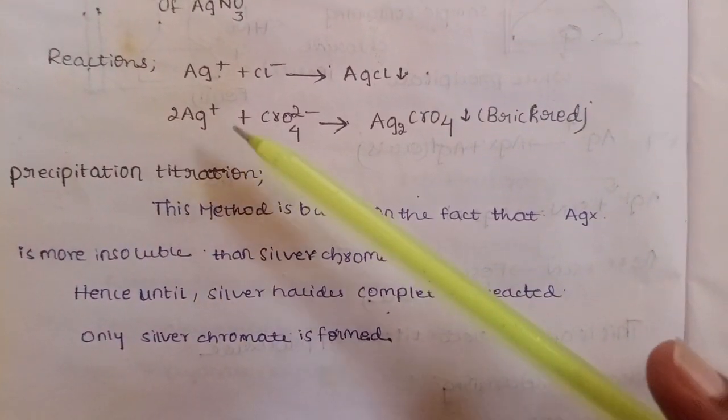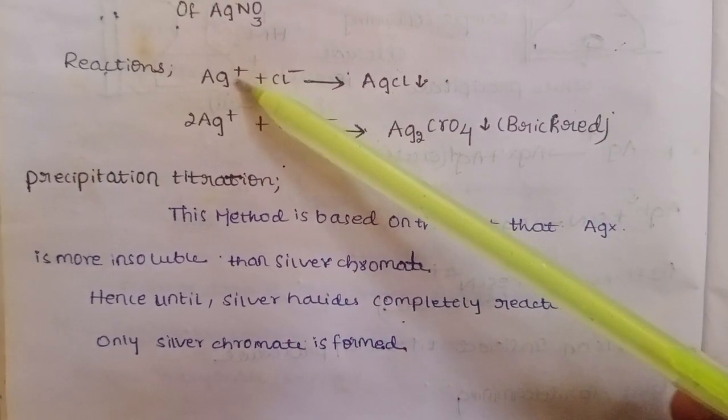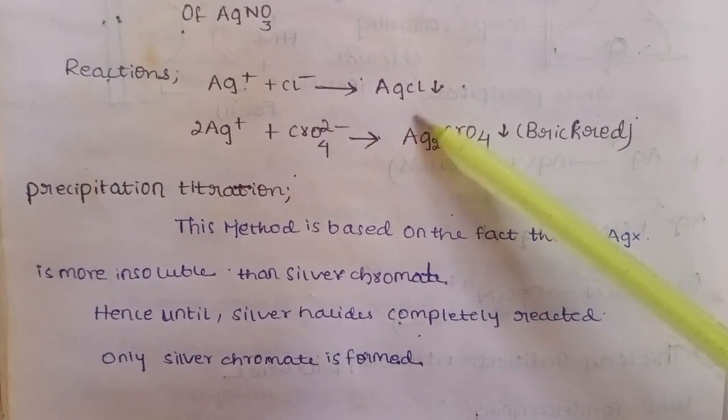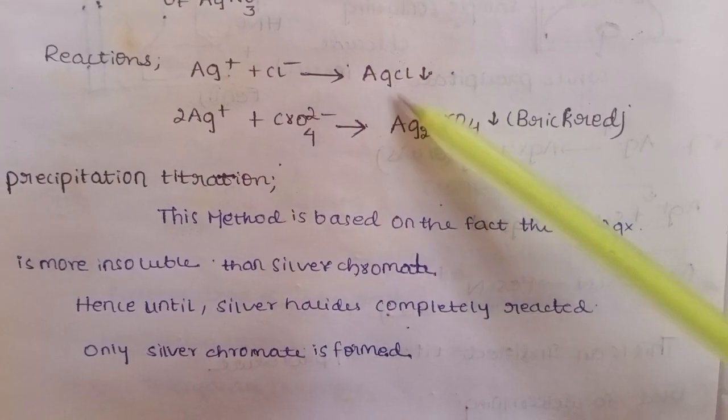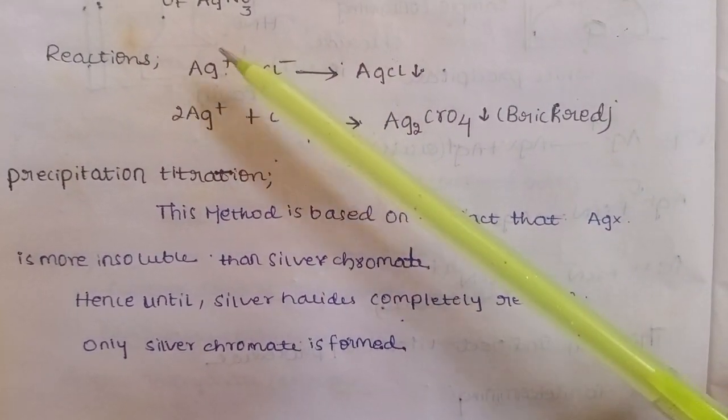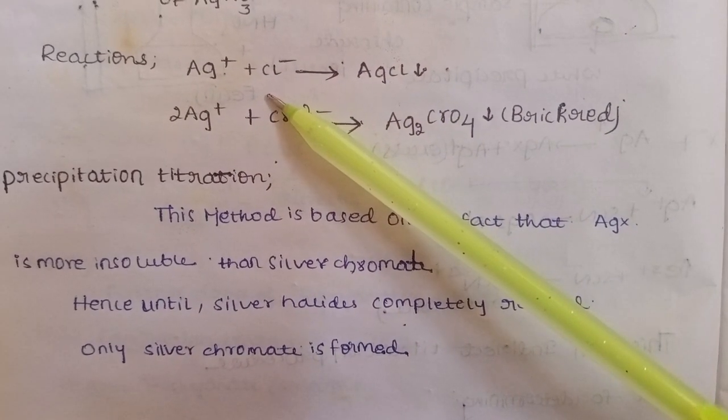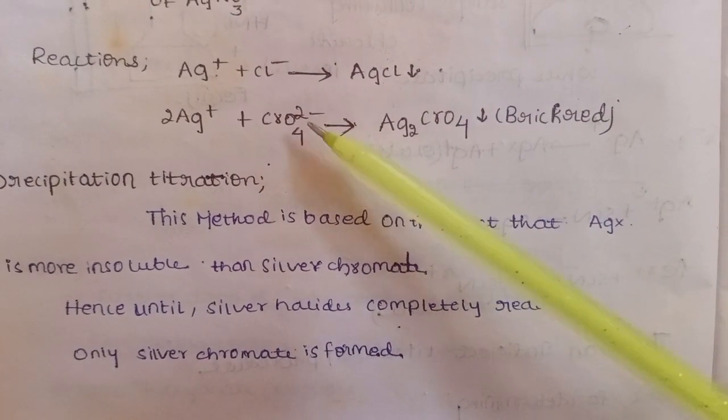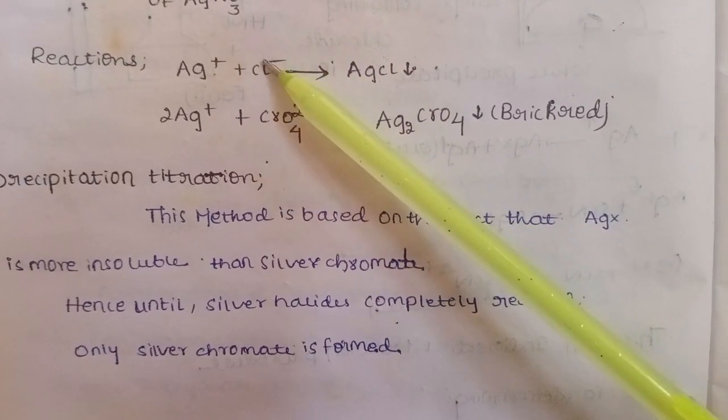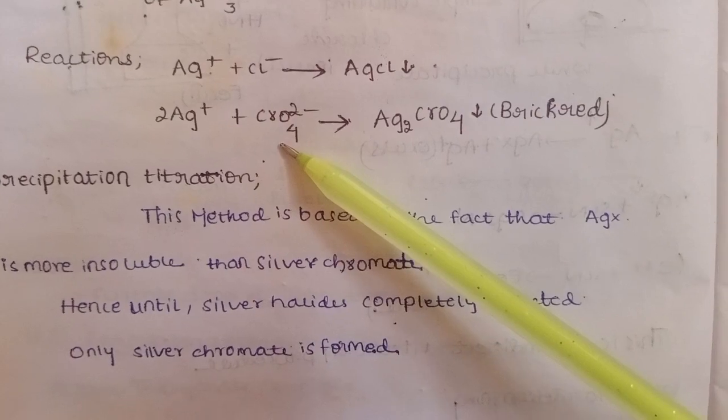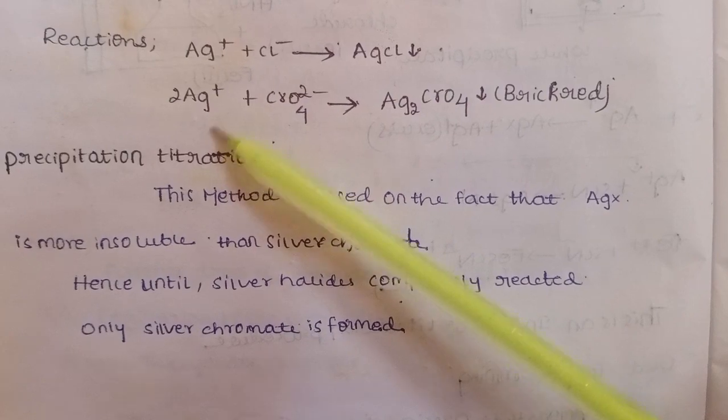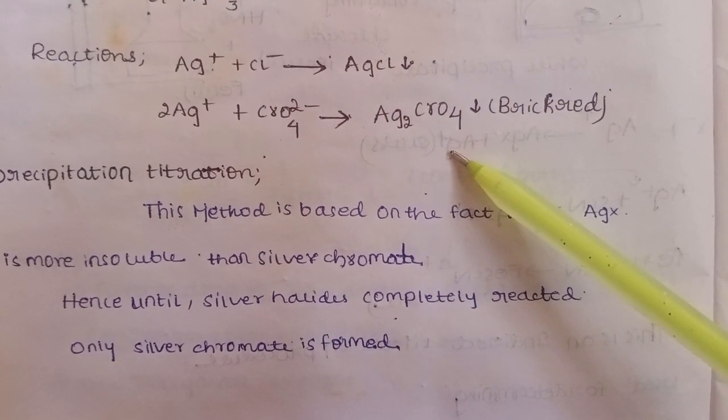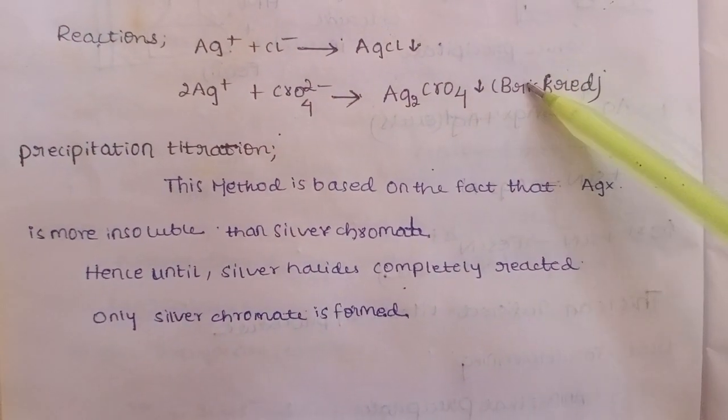The reactions are: Ag+ + Cl- → AgCl (white precipitate), then with excess Ag+: 2Ag+ + CrO4 2- → Ag2CrO4 (brick red precipitate). The color change at the endpoint can be detected.